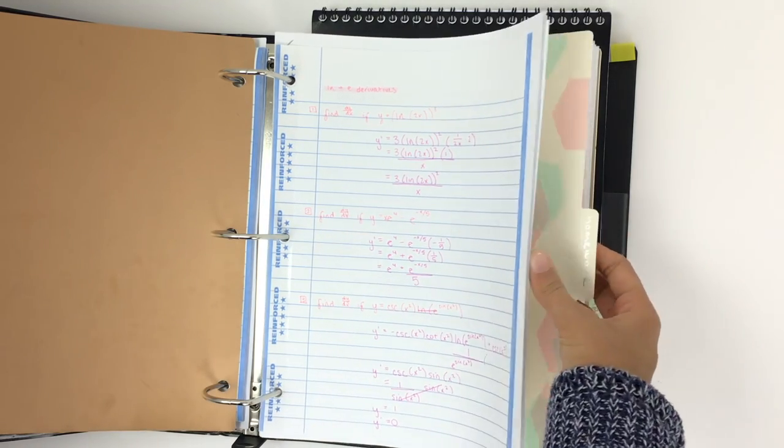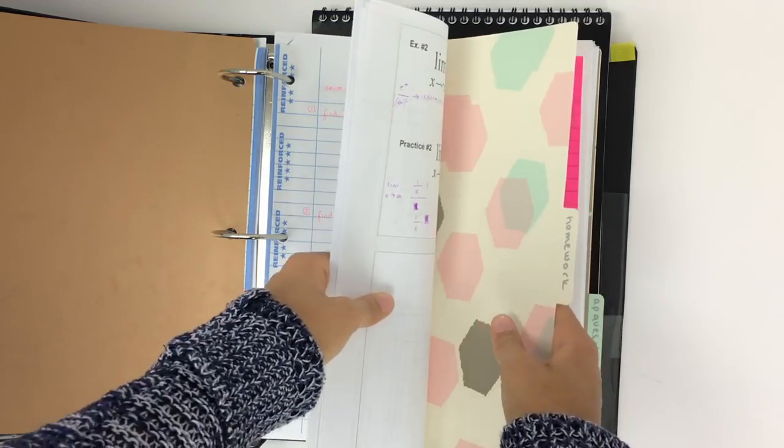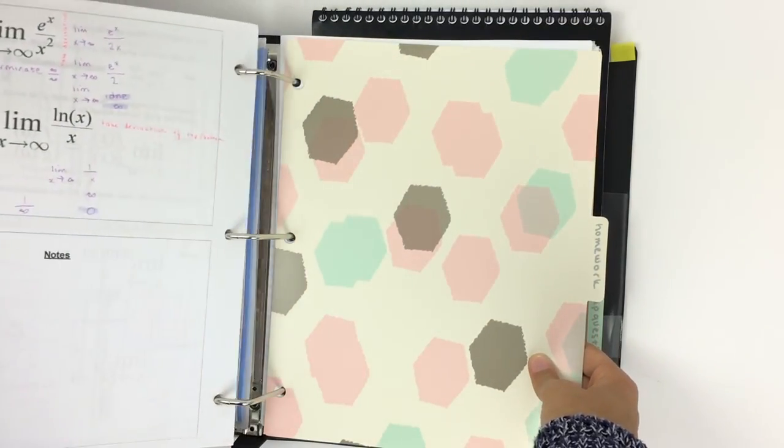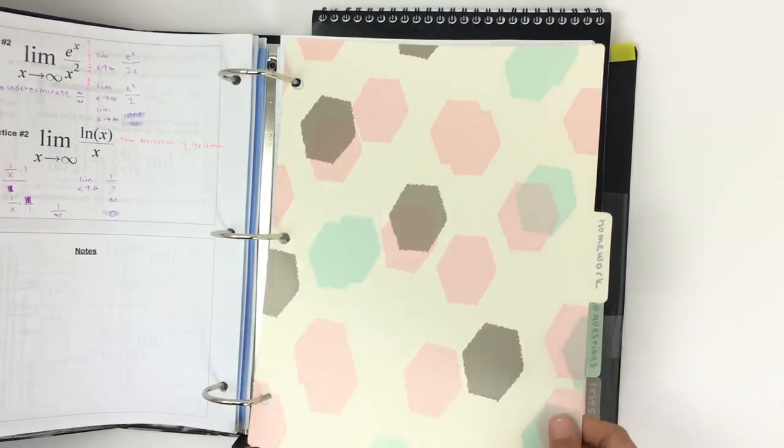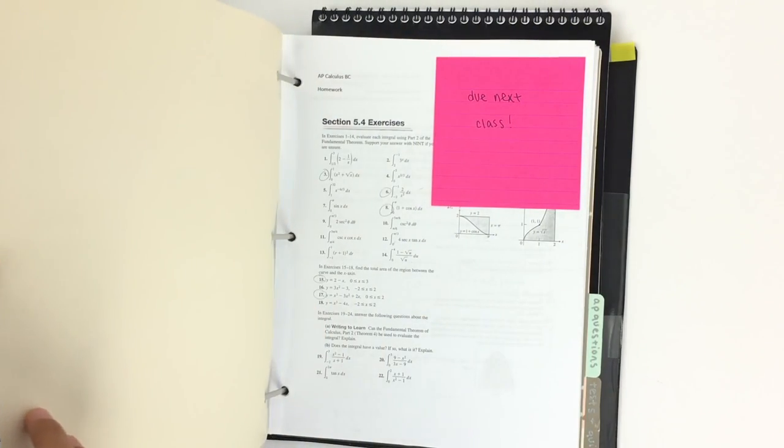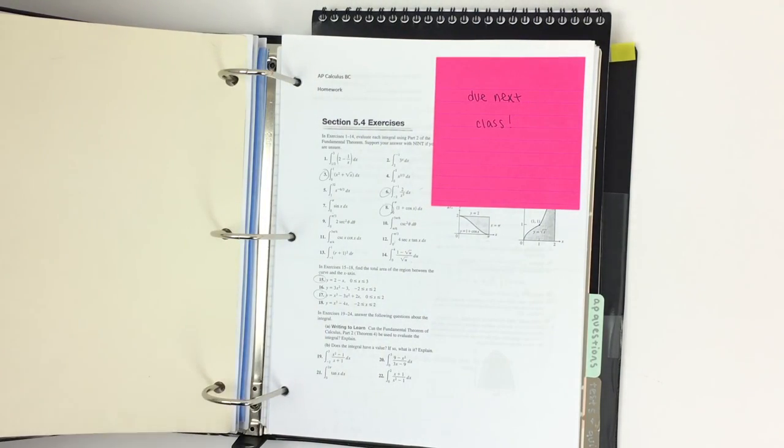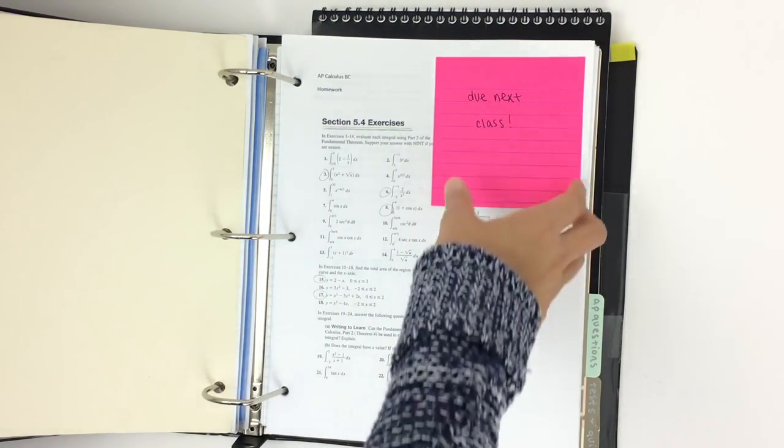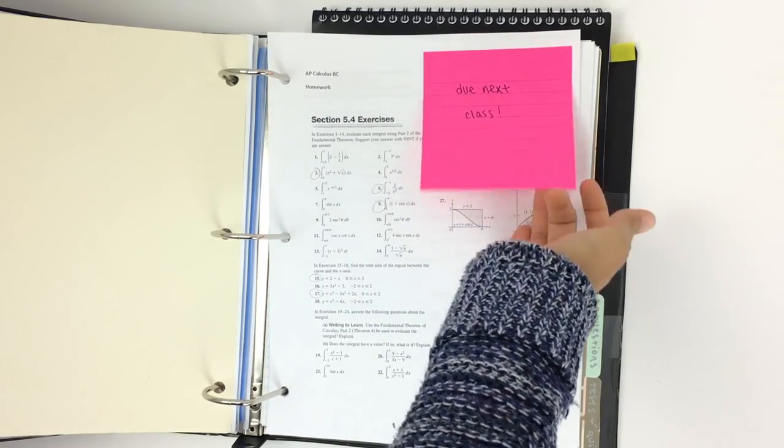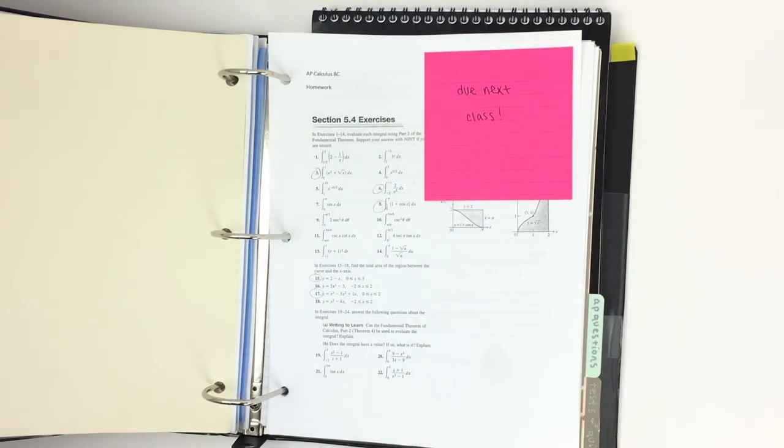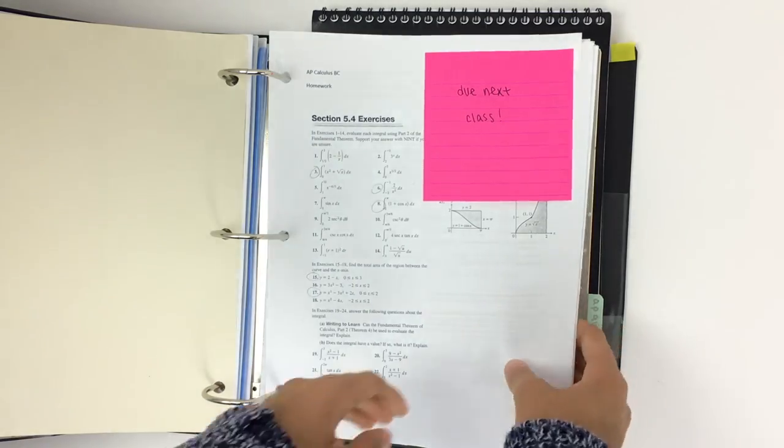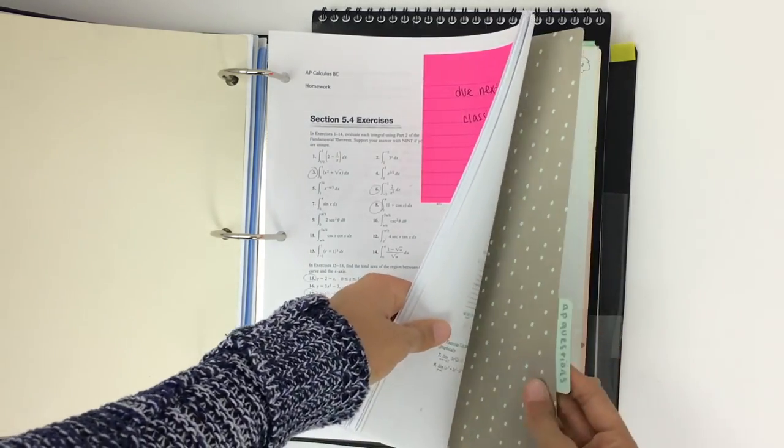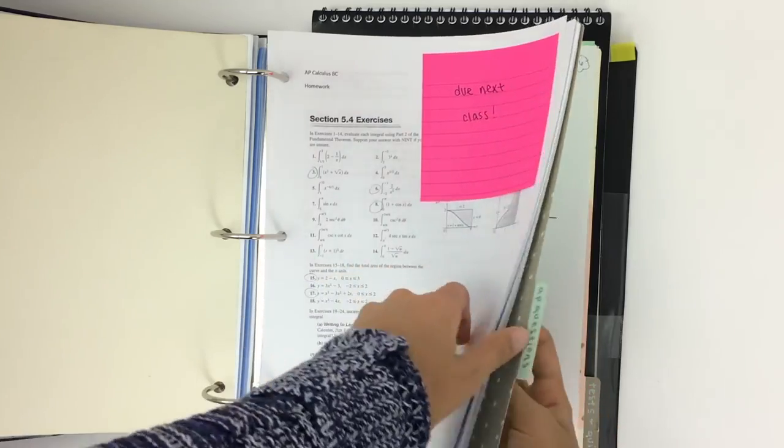My next section is for homework, and I actually set this up pretty differently because I have all of the actual homework I'm assigned in the section. I always put this pink post-it note on whatever is due the next class just to remind me what is urgent and what needs to be done immediately.